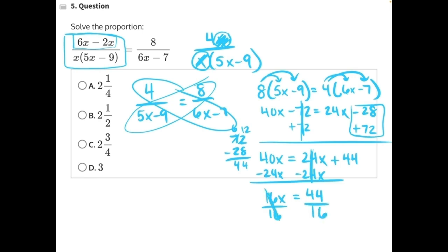These 16s will cancel, leaving us with x equals 44 over 16. Now the last step is to simplify this fraction. Because it is improper, we need to make it into a mixed fraction.